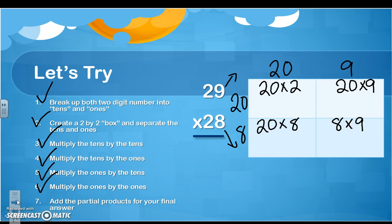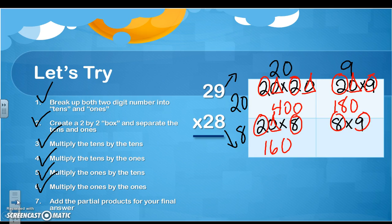Now I'm going to circle my basic fact and triangle my 0s. There should be another 0 for the 20s. So I have 2 times 2 is 4 plus 2 more 0s is 400. 2 times 9 is 18 plus 1 more 0 is 180. 2 times 8 is 16 plus 1 more 0 is 160. And 8 times 9 is 72.